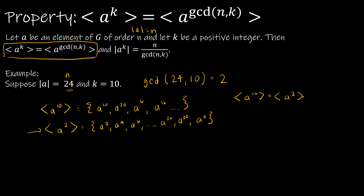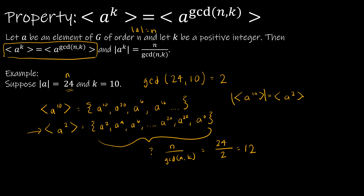Why is that helpful? Because this one's a lot easier to do — a lot less mental math. Just go up by twos until you get back to the identity. The other part says how many elements are in here. The number of elements is N divided by the GCD of N and K. In this case, 24 divided by 2 is 12. So the number of elements in each of those subgroups would be the same, and in this case that number is 12. So the order of that element is 12.